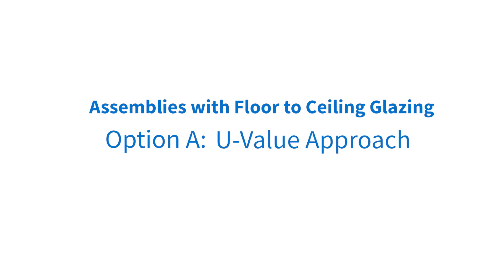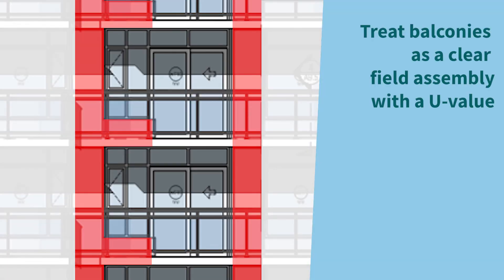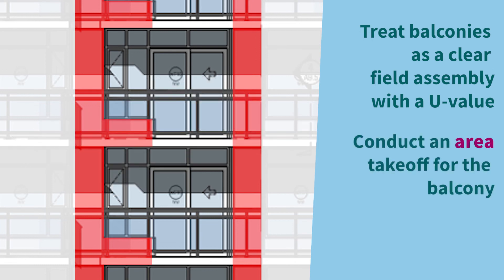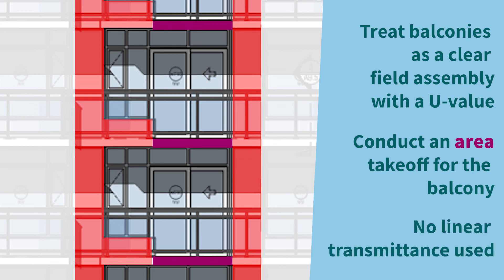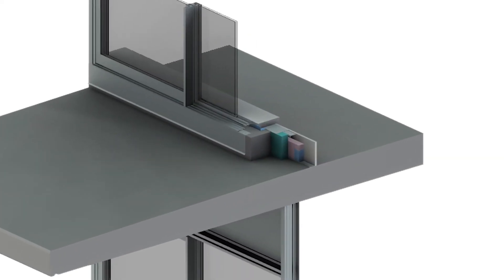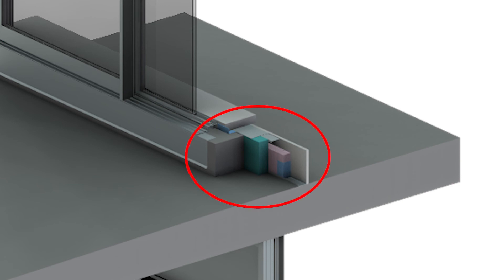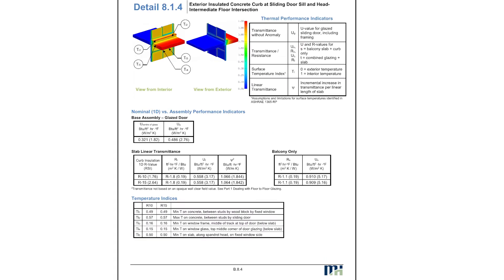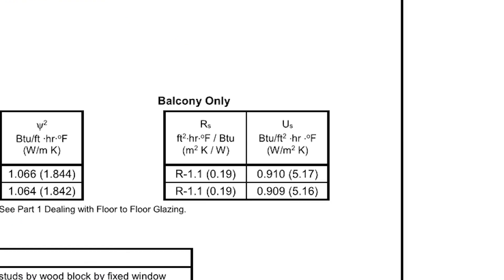Option A: U-value approach. You can apply the balcony area between the full height glazing sections as its own assembly with a U-value. This requires an area takeoff for the projected balcony slab with no linear transmittance needed. This area would include any curbs above the floor. You can find these U and R values in the BETB Guide in Section 8 with the subscript S.